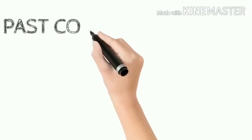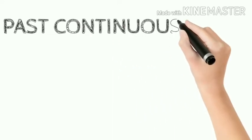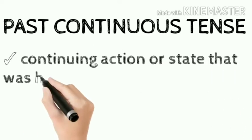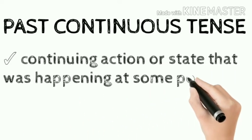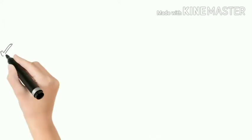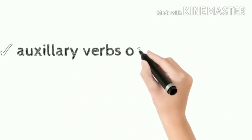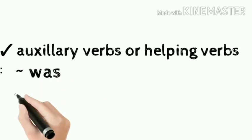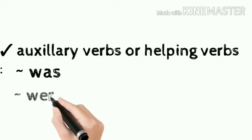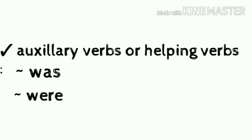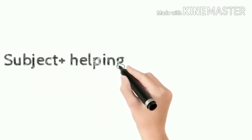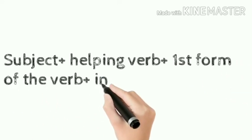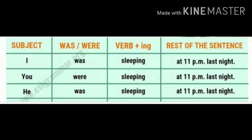The second one is the past continuous tense. It expresses a continuing action or state that was happening at some point in the past. The auxiliary verbs or helping verbs used are was and were. The rule says: subject plus helping verb plus first form of the verb plus -ing plus the object.